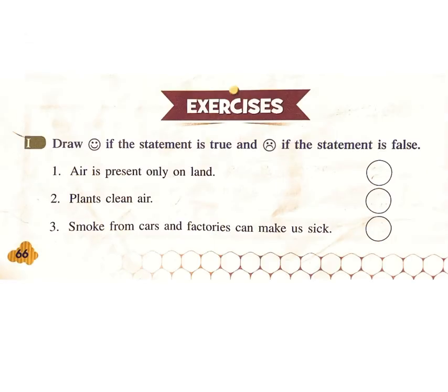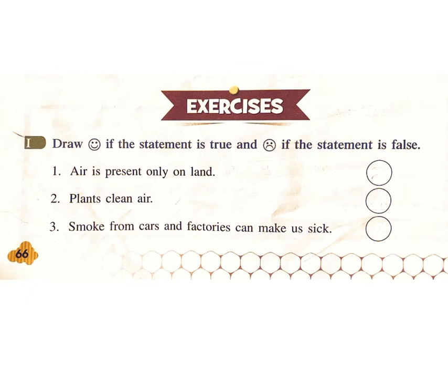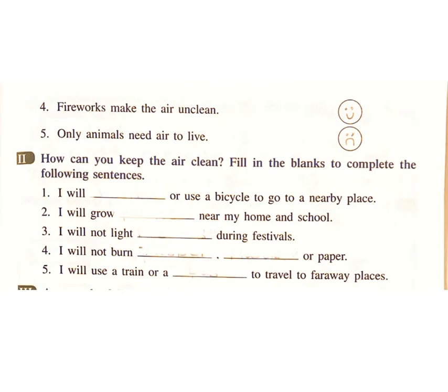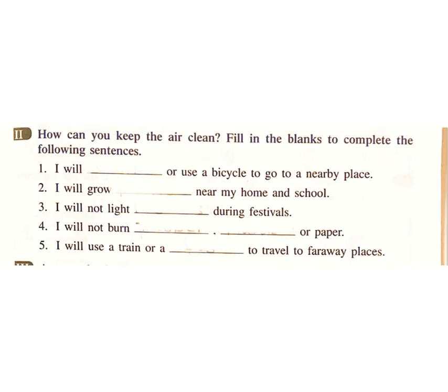Exercises — Draw a tick if the statement is true and a cross if the statement is false. One: Air is present only on land. Answer: False. Two: Plants clean air. Answer: True. Three: Smoke from cars and factories can make us sick. Answer: True. Four: Fireworks make the air unclean. Answer: True. Five: Only animals need air to live. Answer: False.